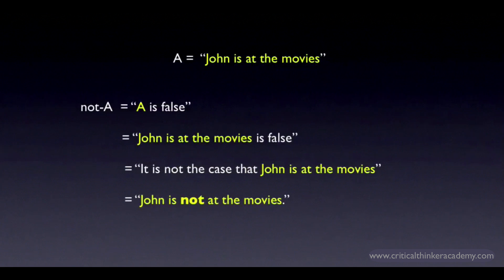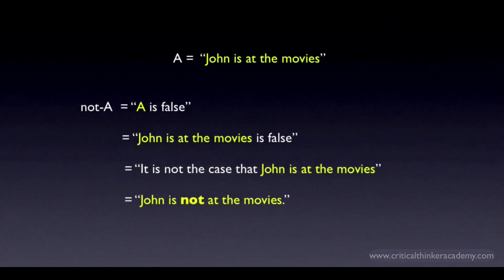For simple claims like this, it's not too hard to find a natural way of expressing the contradictory. For compound claims — like conjunctions or disjunctions, or conditionals — finding the contradictory isn't so simple, and sometimes we have to revert to more formal language to make sure we're expressing the contradictory accurately. In part three, we'll spend some time looking at the contradictories of compound claims.